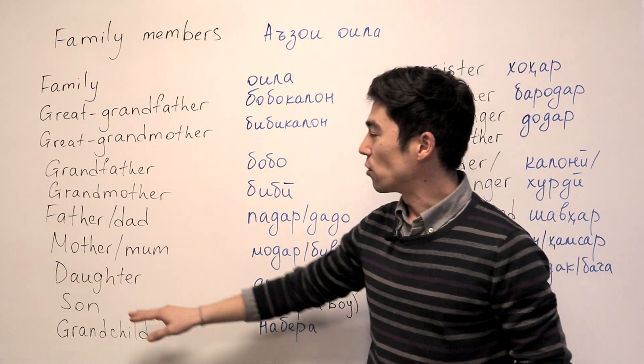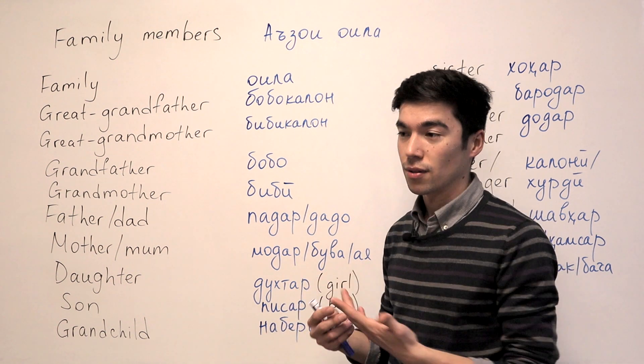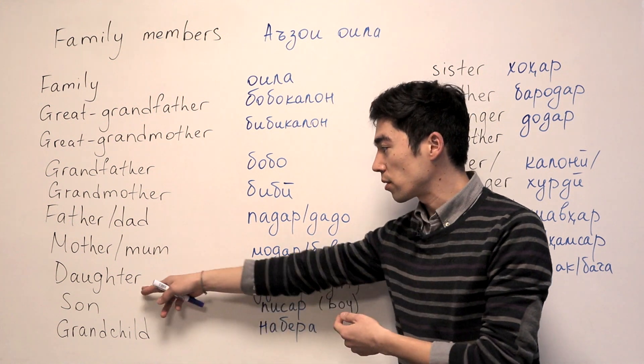And daughter will be Dukhtar. Dukhtar is also a girl. So girl will be Dukhtar and daughter also will be Dukhtar.